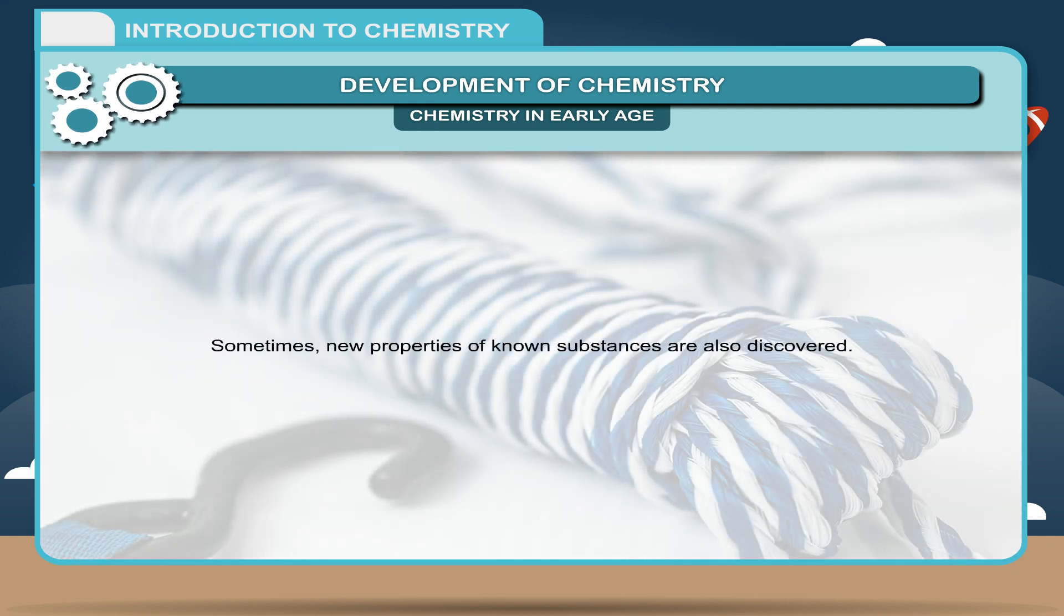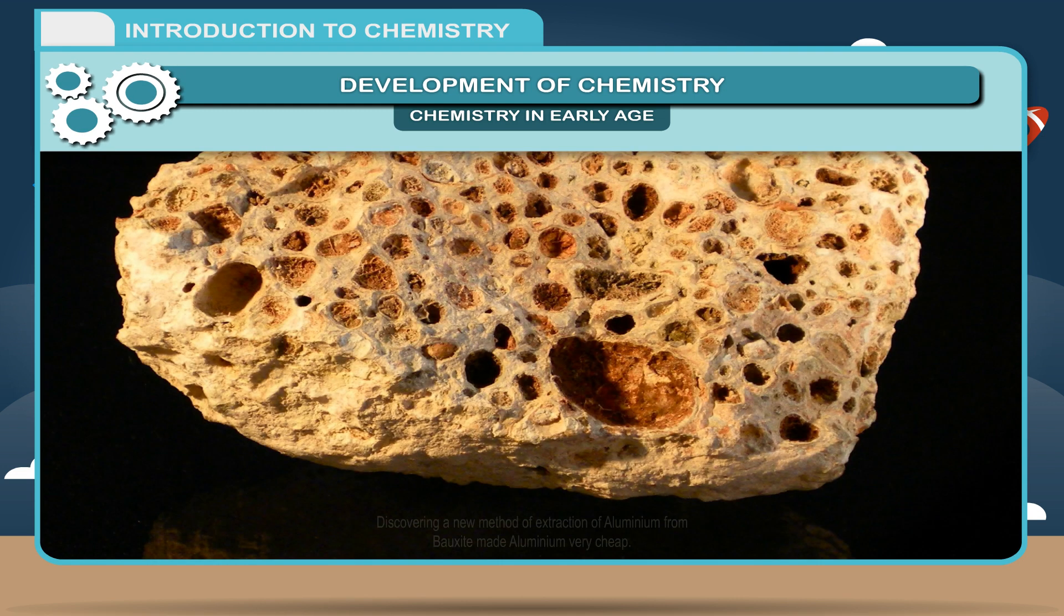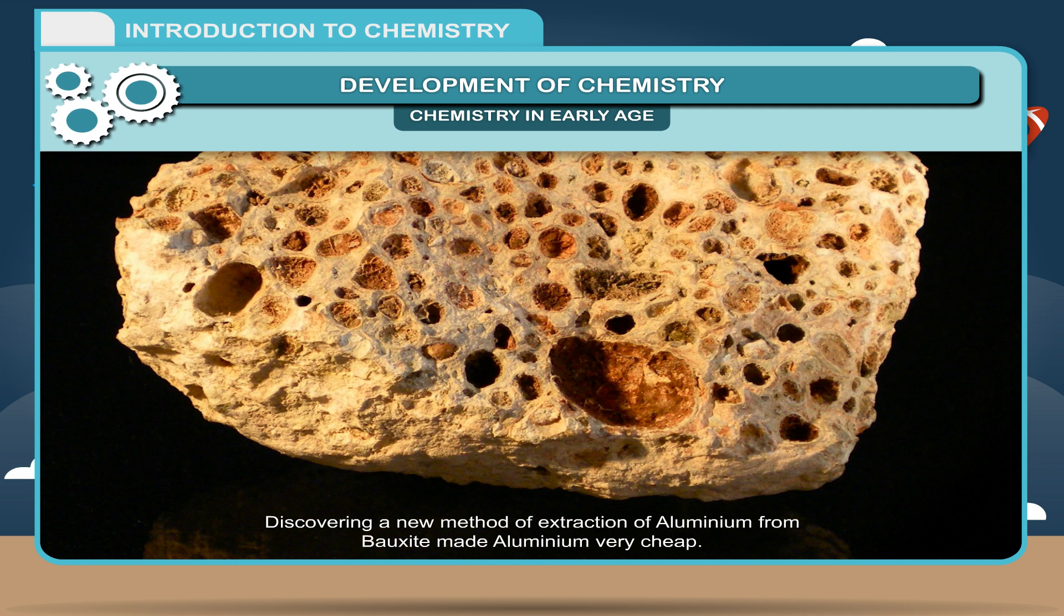Sometimes, new properties of known substances are also discovered. Discovering a new method of extraction of aluminium from bauxite made aluminium very cheap.